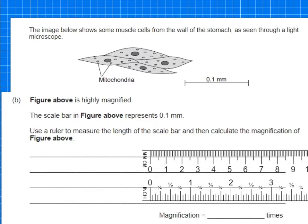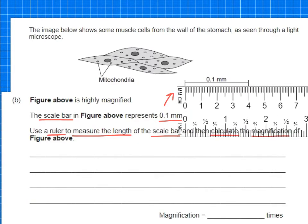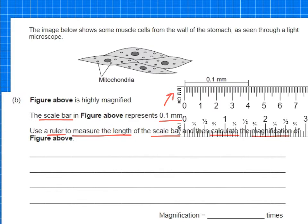In this question, they show you the image and tell you it's highly magnified, but this time they're giving you a scale bar. The scale bar represents 0.1 millimeters, and you can see it above there. It says use a ruler to measure the length of the scale bar and then calculate the magnification. Let's first take the ruler, place it on there, and you can see that it is 40 millimeters. Just to remind ourselves, I'm going to do my IAM triangle.